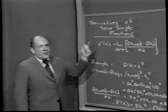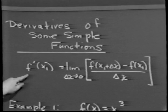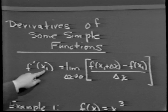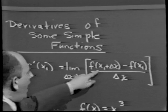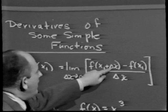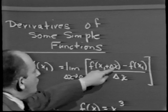Let's go back to our basic definition. The derivative of f of x, when x is equal to x₁, f prime of x₁, is by definition the limit as delta x approaches 0 of f of x₁ plus delta x minus f of x₁ over delta x. In other words, the average rate of change of f of x with respect to x as we move from x₁ to some new position, x₁ plus delta x, taken in the limit as delta x approaches 0.